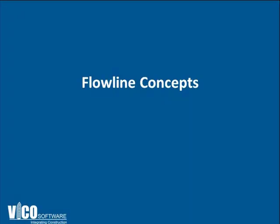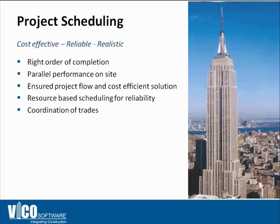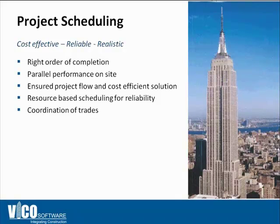Flowline is actually not something new. It was used in building the Empire State Building, which was built in just a little over one year. The builders had to manage thousands of people on a very tight site. They basically drew Flowline on paper with pencil, which helped them ensure continuous flow and efficiently utilize the tight site during construction.